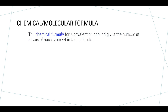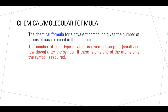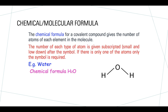Chemical formulas form an important part of today's lesson. For a covalent compound, your chemical formula gives you the number of atoms of each element in the molecule. For example, the chemical formula for water, which is a covalent substance, is H2O. The subscript 2 tells us that in a water molecule there are two hydrogen atoms and one oxygen atom.